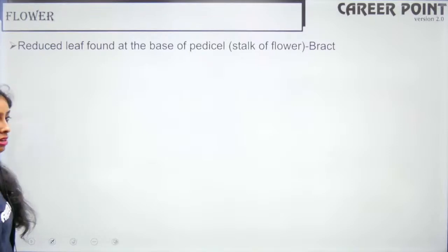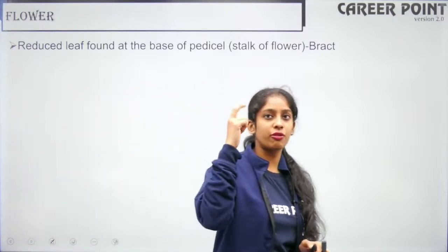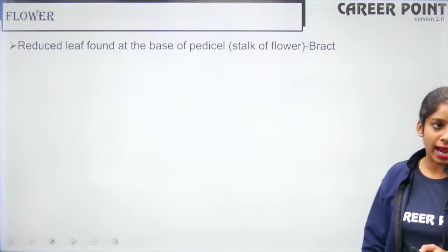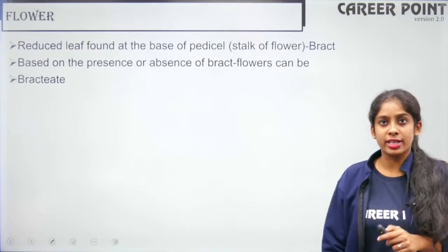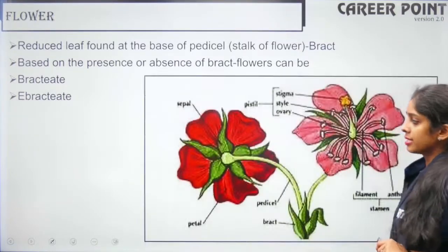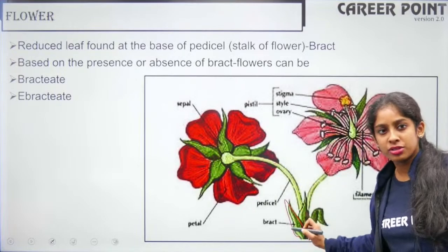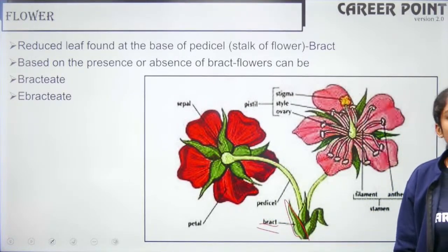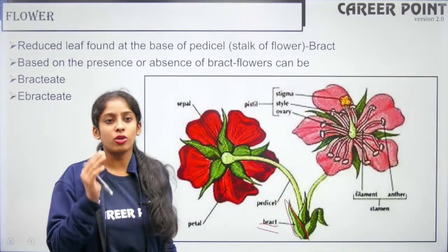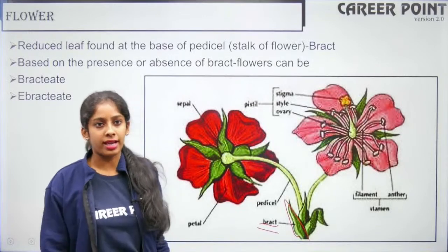When you have a reduced leaf at the base of your pedicel — the stalk connecting your flower to the stem — it is called a bract. When a flower has a bract it is called bracteate or bractiose; when it does not have a bract it is called ebracteate or ebractiose. This is an important character used in the floral formula.